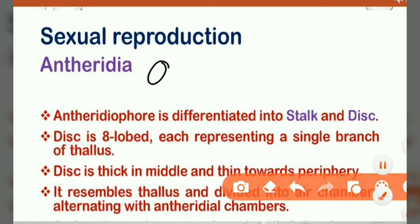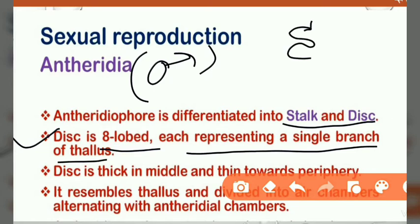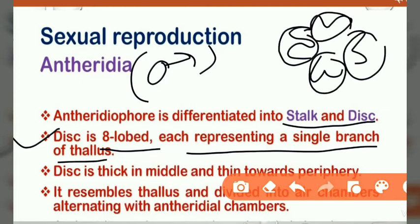Antheridia develop on the antheridiophore and archegonia develop on the archegoniophore. The antheridiophore is differentiated into two parts: stalk and disc. It is an eight-lobed structure representing a single branch of the thallus. The disc is thin towards the periphery and there are lots of air chambers present, which help in the exchange of gases.